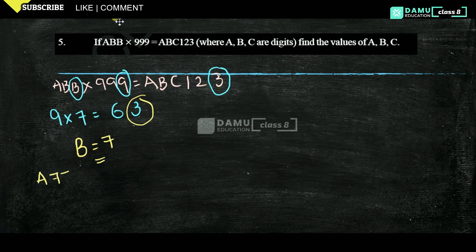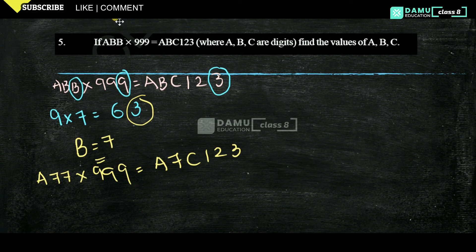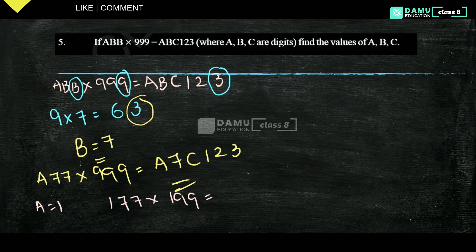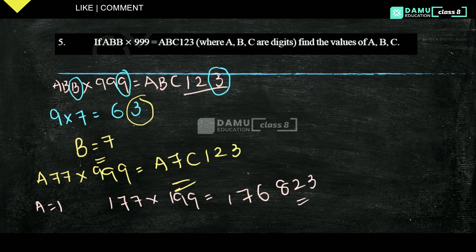Then A77 into 999 gives A7C123. Let A equal 1: 177 into 999 gives 176823. We need 123 at the end — we're getting 823, not 123. So A is not 1. Let A equal 5: 577 into 999 gives 576423 — still not 123.